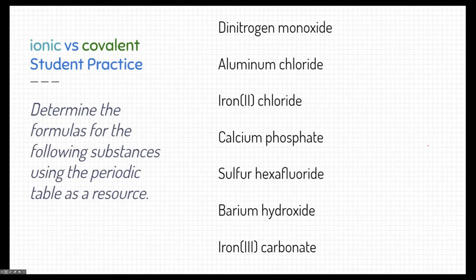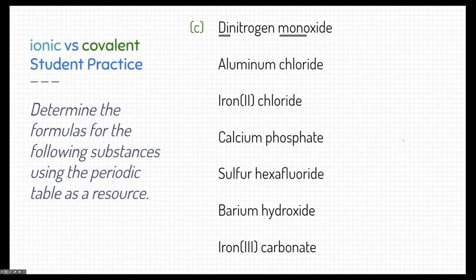Dinitrogen monoxide: the first thing we need to do is realize whether it's ionic or covalent. Nitrogen and oxygen are both non-metals, so this is a covalent compound. Covalent compounds rely on prefixes in the name to determine the quantity of each substance. Dinitrogen means two nitrogens, and monoxide — mono means one — so there's one oxygen. So I'm going to write the chemical formula N2O.